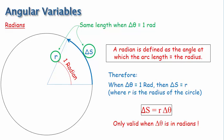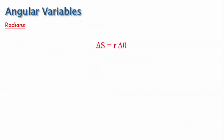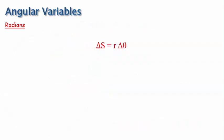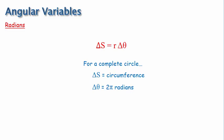Something that's interesting is that the equation for circumference of a circle can easily be derived with this equation. Applying this equation to a complete circle, delta s would then be the circumference, and delta theta would be 2 pi radians by definition. Substituting these into the equation, we then get the familiar equation, circumference equals 2 pi r.